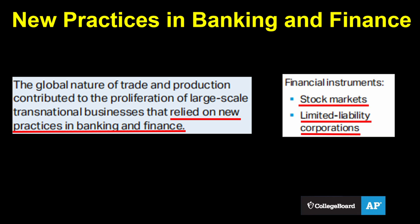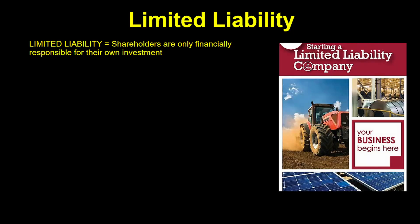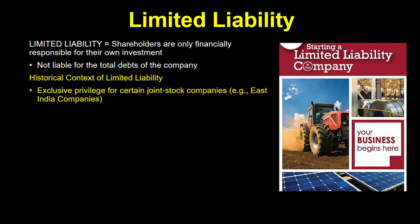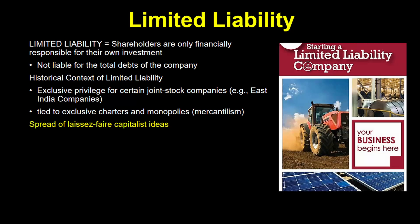Two of the examples the College Board provides are limited liability companies and stock markets. Limited liability is the idea that shareholders — individuals who own pieces of a company — are only financially responsible for their own investment, not the total debts of the company. Many joint stock companies we saw in Unit 4, like the East India companies, were allowed limited liability, but this was a special privilege not available to most people — part of their exclusive charter, along with the right to set up monopolies. It was still very mercantilist. But as laissez-faire capitalist ideas spread, governments allowed more companies limited liability status.